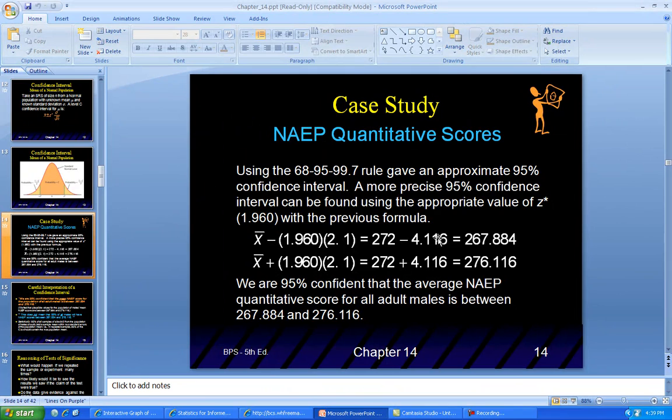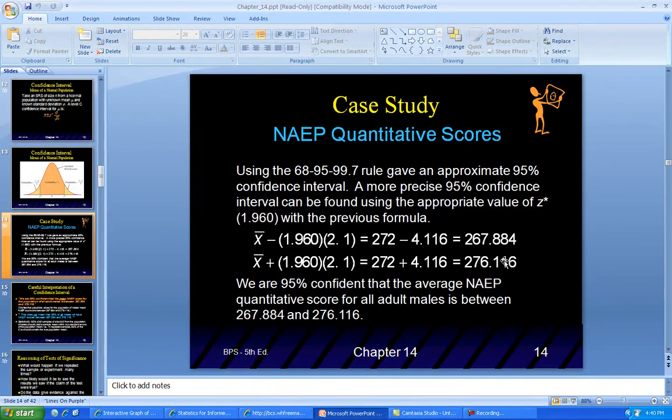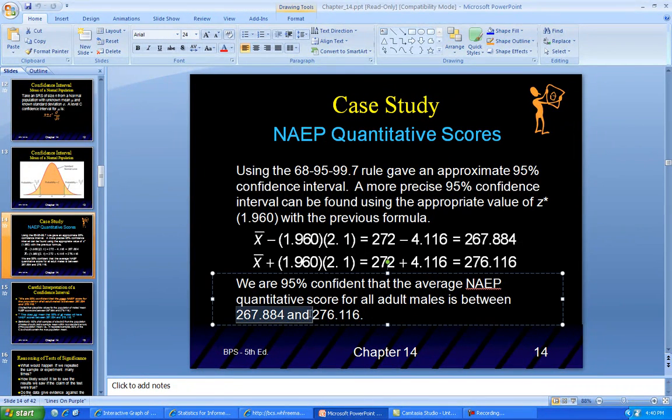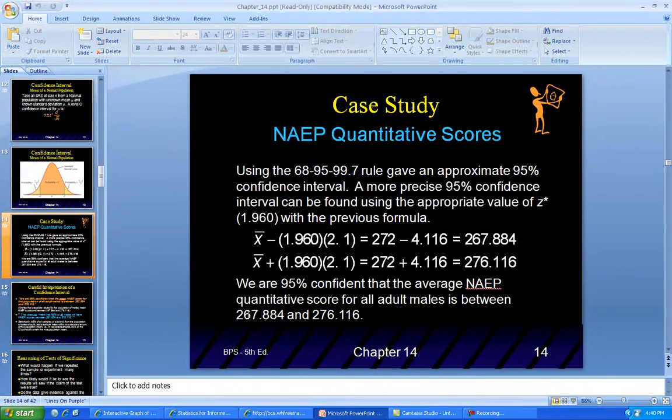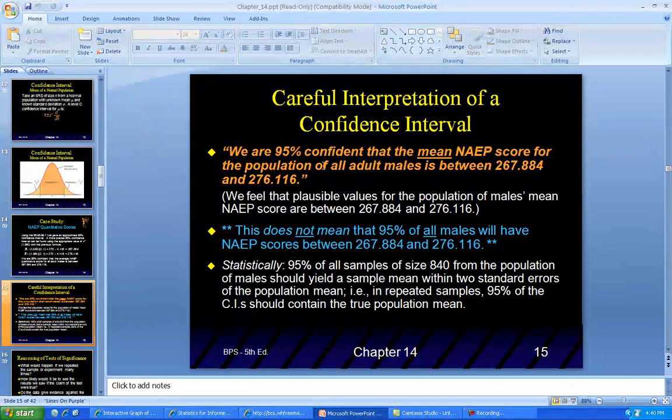When we go to the other side we get 276.116. Now we can say we are 95% confident that the average NAEP quantitative scores for all adult males is between 267.884 and 276.116. We can say that with 95% confidence.